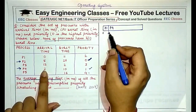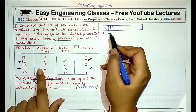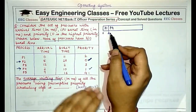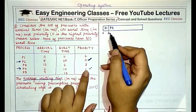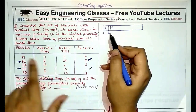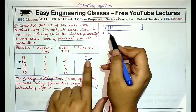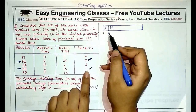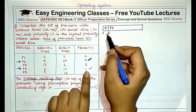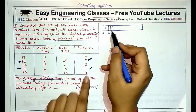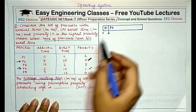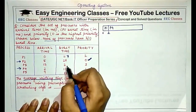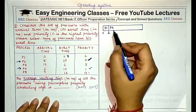P1 continues to execute until P4 arrives at time two. P4 has a priority of one, which is higher than P1's priority of two. Since one is a higher priority than two, we preempt P1 and start executing P4. P1 executed for two units, so its remaining burst time is seven units.